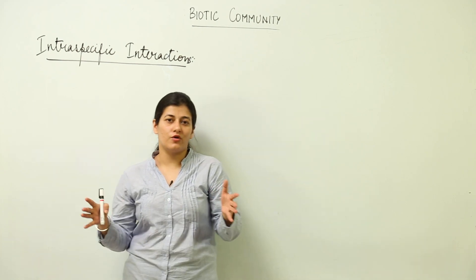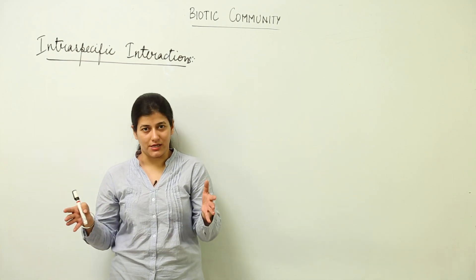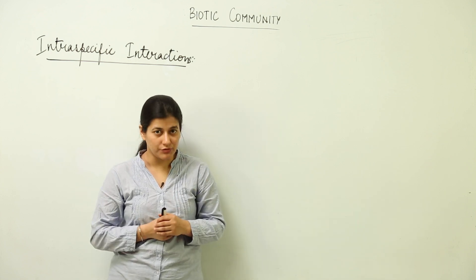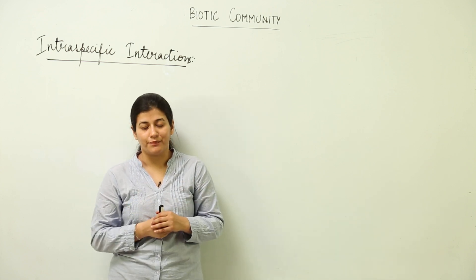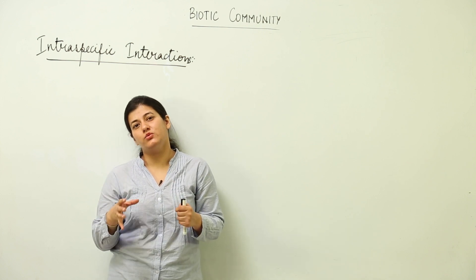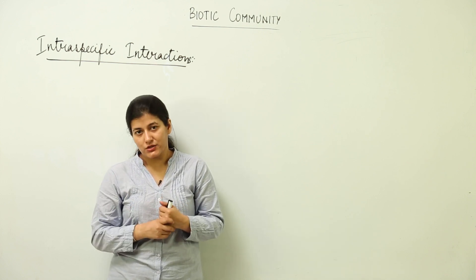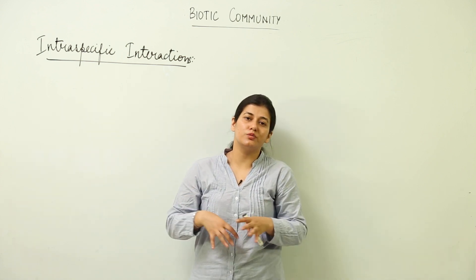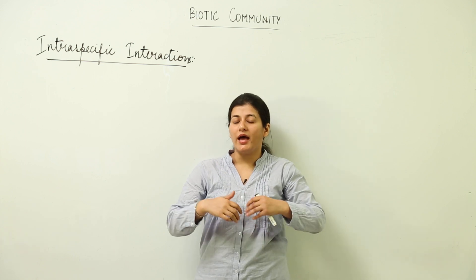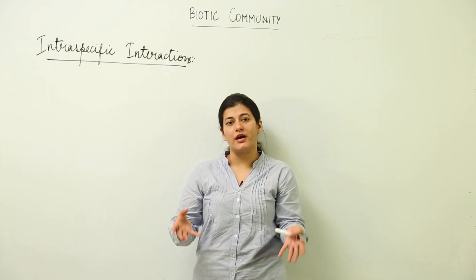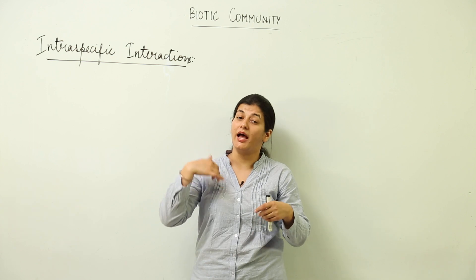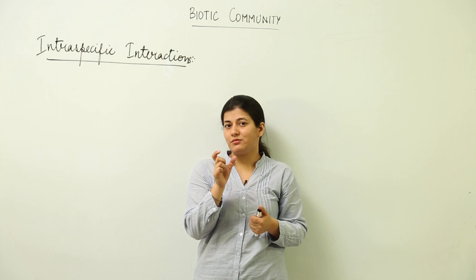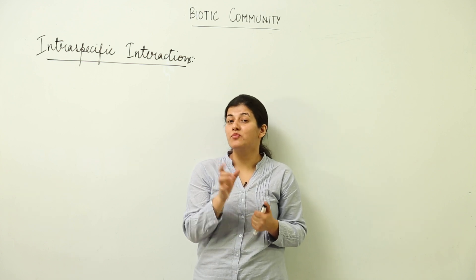A group of organisms in a given habitat, when they are interacting, they become a biotic community. At species level, they're not a biotic community until we use the word interaction. So it is all about interaction of living species within themselves that makes a biotic community. And when those biotic communities interact within themselves as well as with the environmental factor, that becomes an ecosystem.